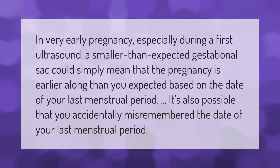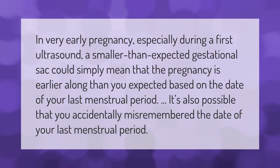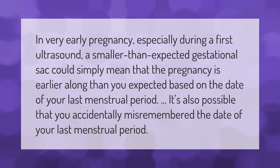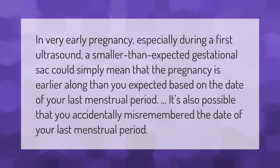In very early pregnancy, especially during a first ultrasound, a smaller than expected gestational sac could simply mean that the pregnancy is earlier along than you expected based on the date of your last menstrual period. It's also possible that you accidentally misremembered the date of your last menstrual period.